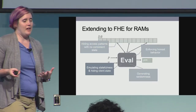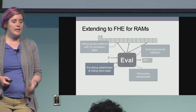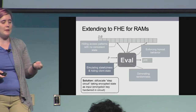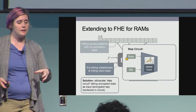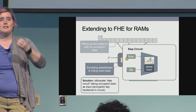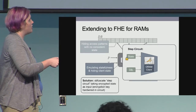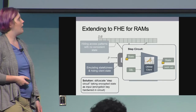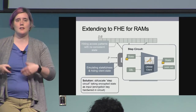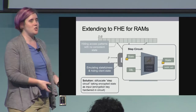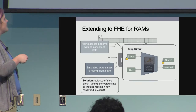We now have three remaining challenges. The first is how do we emulate statefulness and hide the client state? What we do is represent the program as a series of obfuscated step circuits. A step circuit takes in the current client state, takes in a database entry as requested by the ORAM client, and the state itself is encrypted under a hardwired key within this circuit. We then do whatever the program dictates, update the state, and ask for the next value in the database. The evaluator essentially just runs a series of these step circuits up to time T. We then apply VBB obfuscation over the entire thing.